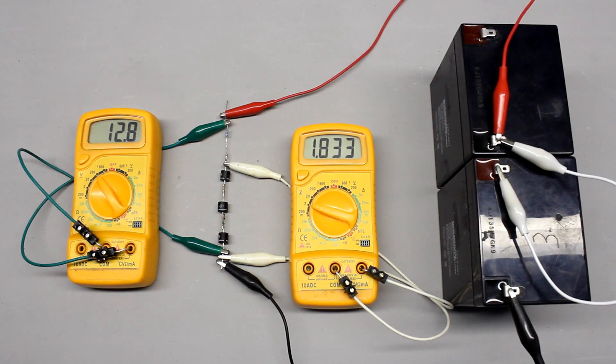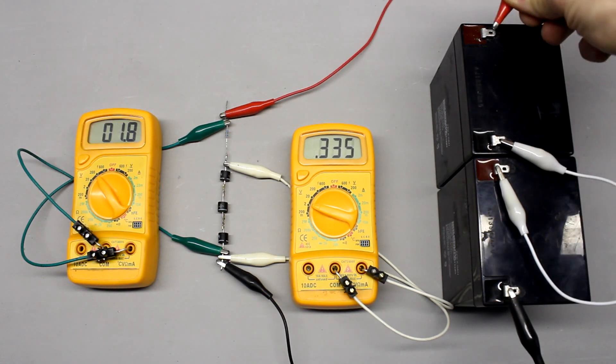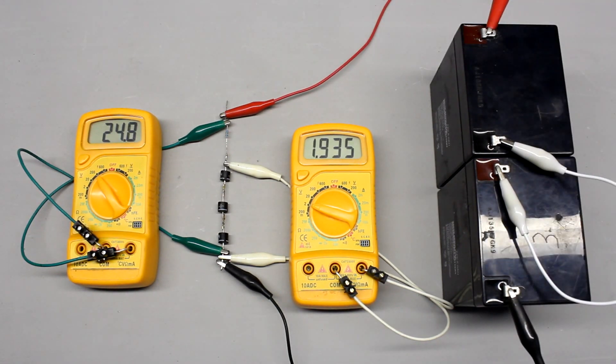By switching two or more forward biased diodes in series, the voltage drop is a multiple of 0.6V. The resulting voltage drop is approximately 1.8V when using three diodes, both at 12V and 24V input voltage.